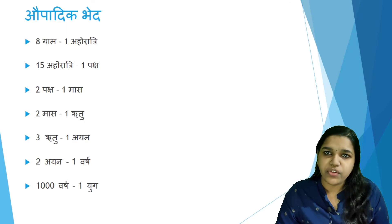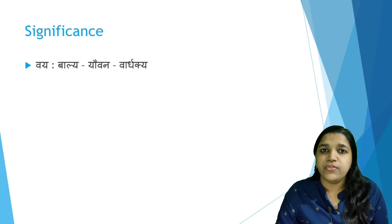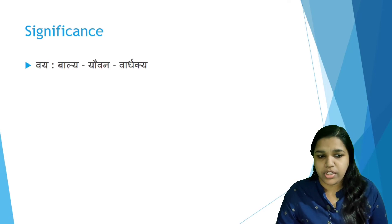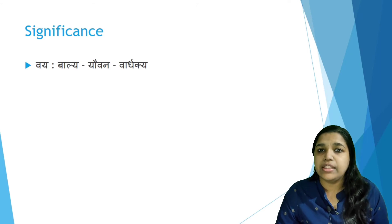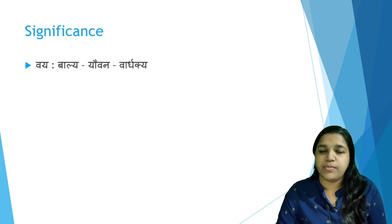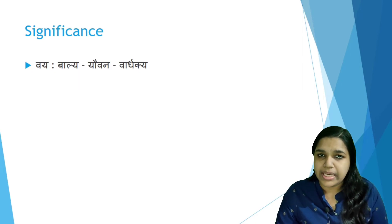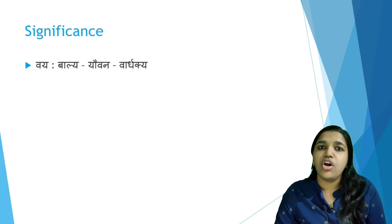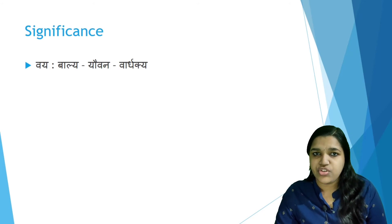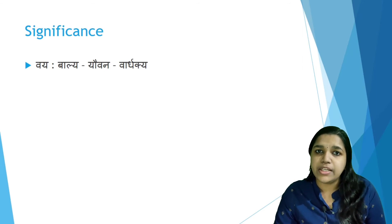The significance of Kala in the classification of Vaya or age: Kala has importance in classifying Balya, Yavana, and Varthakya — the different classifications of age. Up to 16 years is considered Balya or childhood; between 17 to 60 years is Yavana; and above 60 or 70 years, as per different Acharyas, is considered Varthakya or Vrittavastha. This categorization of ages is based on Kala.